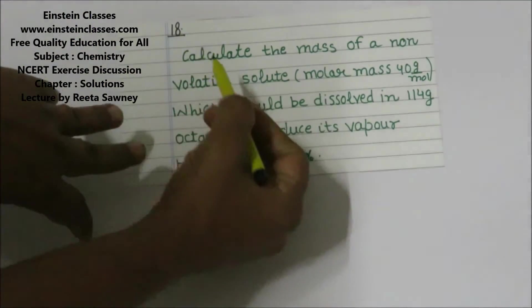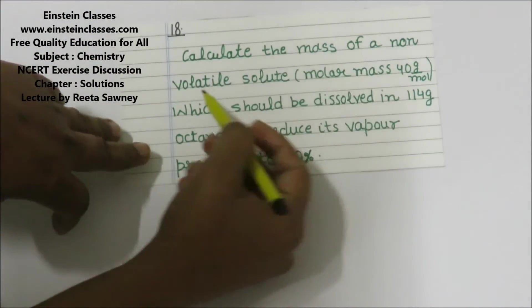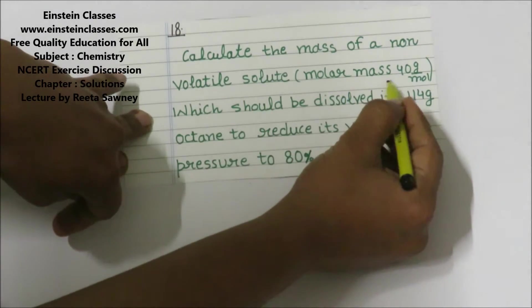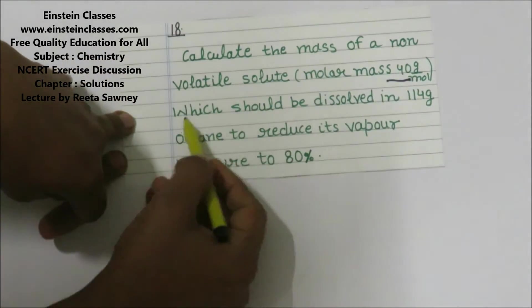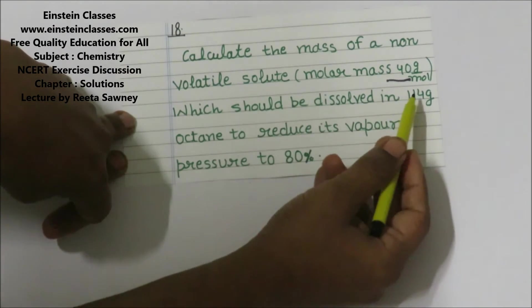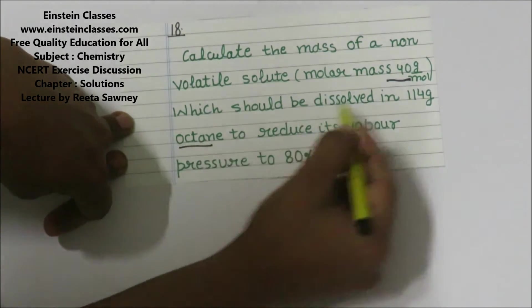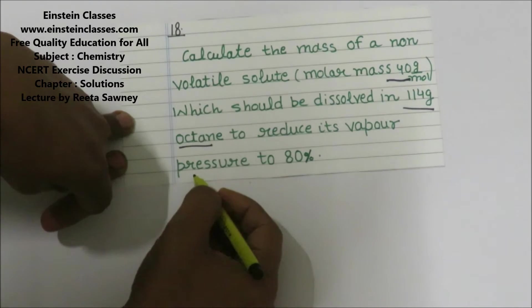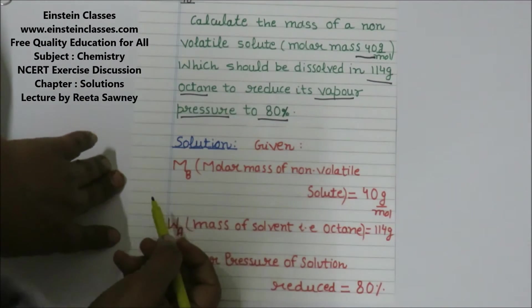In this problem, calculate the mass of a non-volatile solute of molar mass 40 g/mol which should be dissolved in 114 grams of octane to reduce its vapor pressure to 80%.